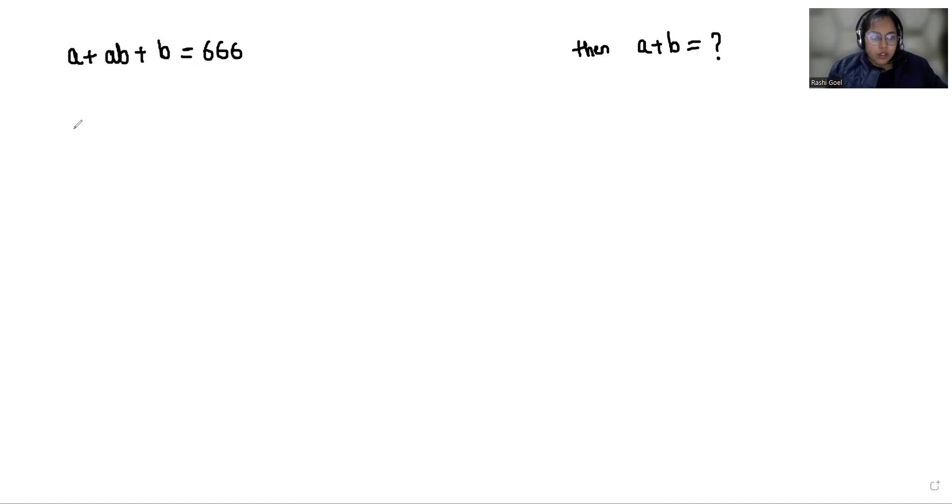So let's start with today's video. First I'm going to add 1 to both sides. A plus AB plus B plus 1 equals 667.